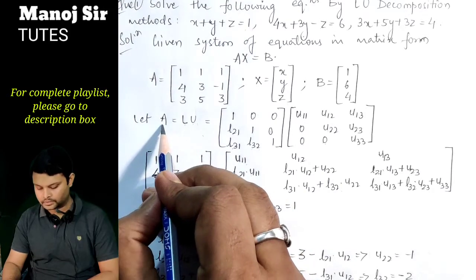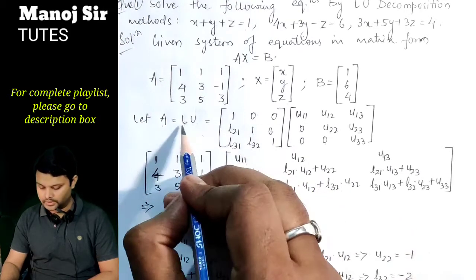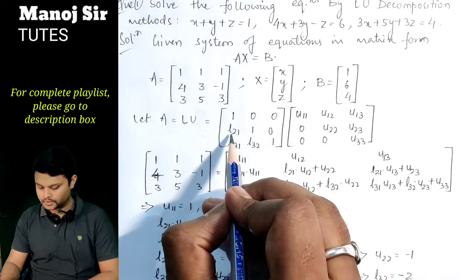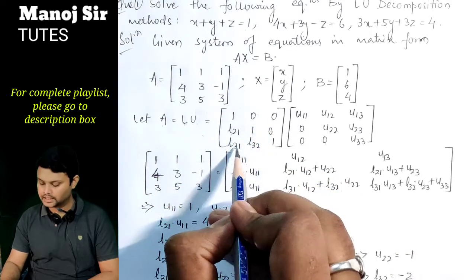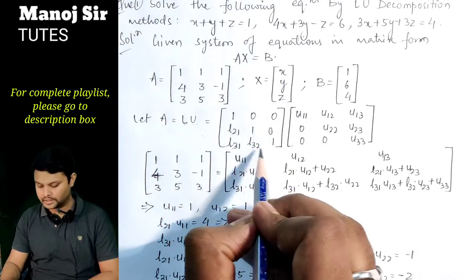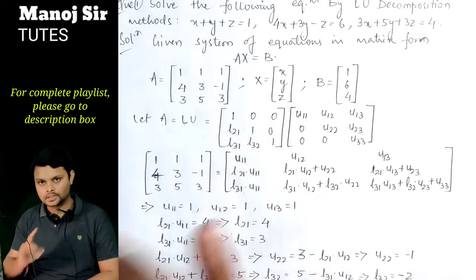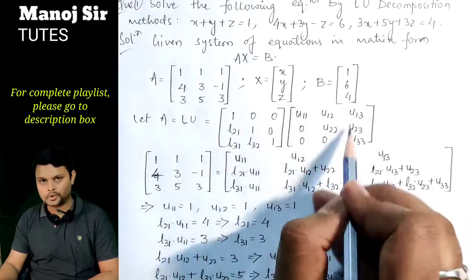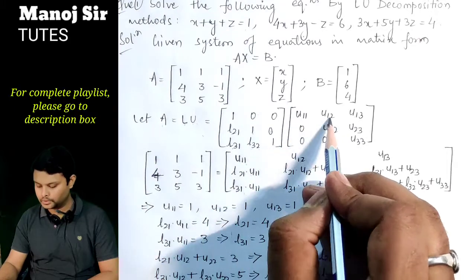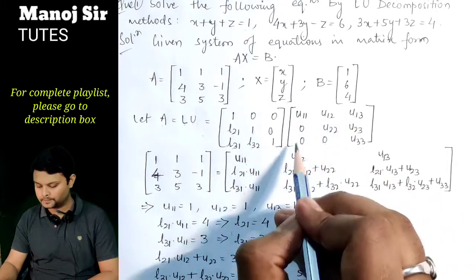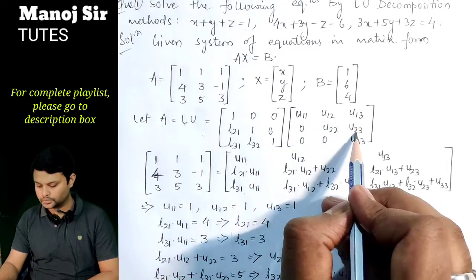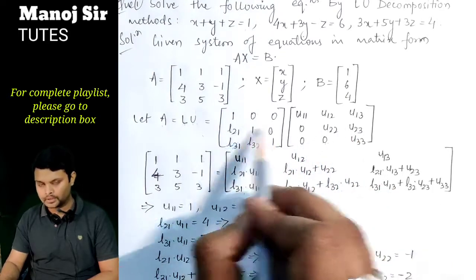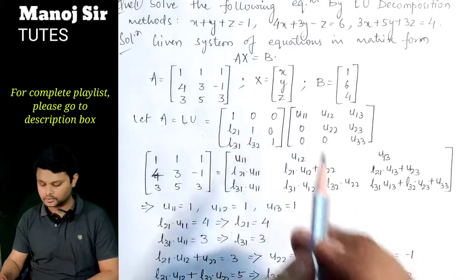Now we write A = L·U, where L is the lower triangular matrix with 1s on the diagonal: [[1,0,0],[l21,1,0],[l31,l32,1]], and U is the upper triangular matrix: [[u11,u12,u13],[0,u22,u23],[0,0,u33]]. We now need to multiply these two matrices.